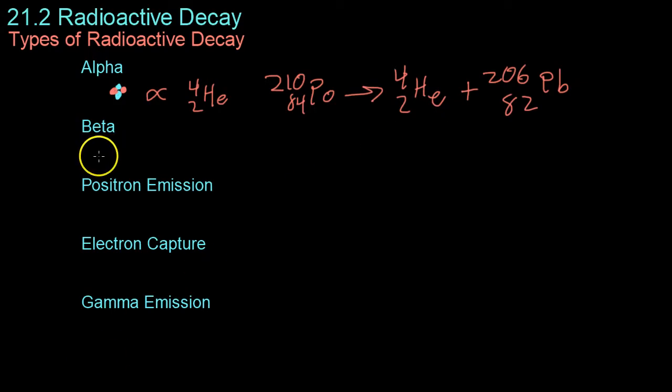The next example is beta decay, which is essentially just the emission of an electron from the nucleus. And this happens when there are too many neutrons. So what ends up happening is that a neutron, in order to fix this too many neutrons, decays into an electron and a proton. So basically this neutron changes into a proton and loses a bit of mass in the form of an electron.